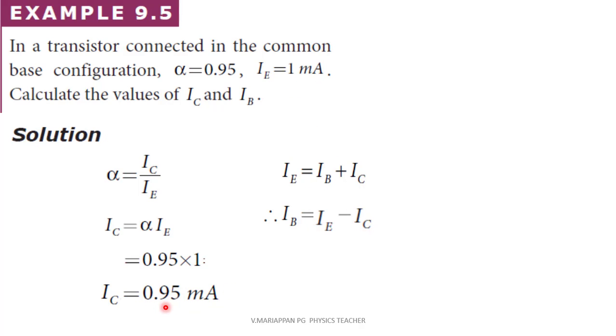Next, to find IB, we use IE equals IB plus IC. Therefore IB equals IE minus IC, which is 1 minus 0.95, giving IB equal to 0.05 milliampere.